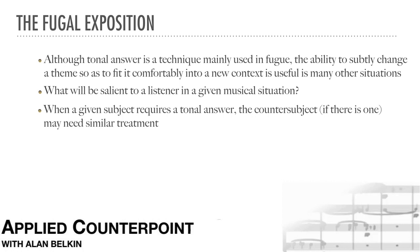When a given subject requires a tonal answer, the countersubject, if there is one, may also need similar treatment. A fugal exposition will present the subject as many times as there are voices. If there is a countersubject, it will be present at all the entries after the first one.